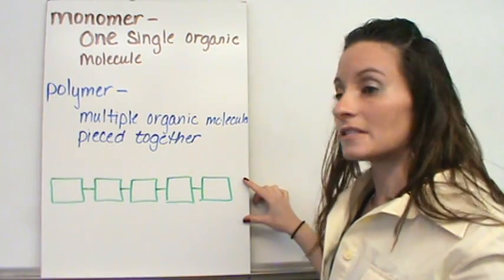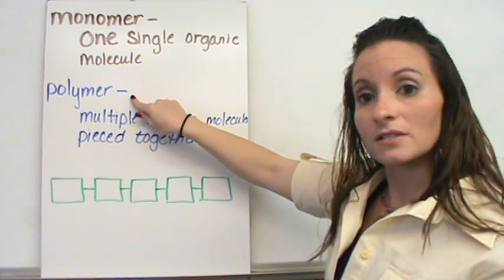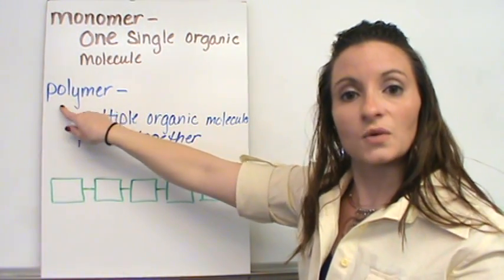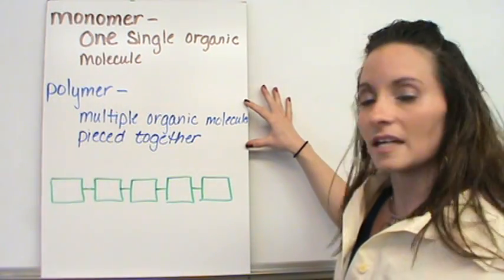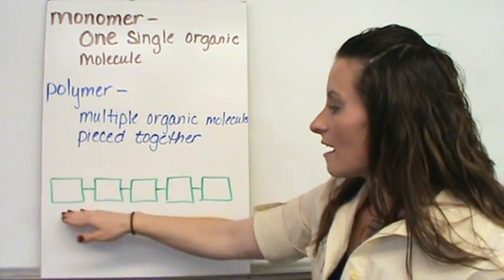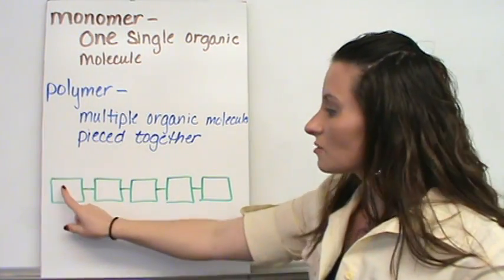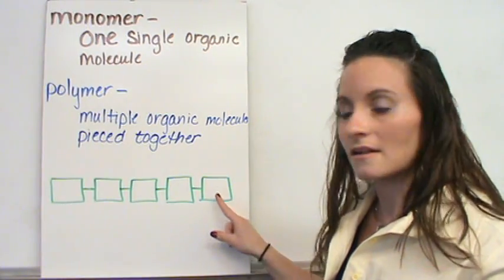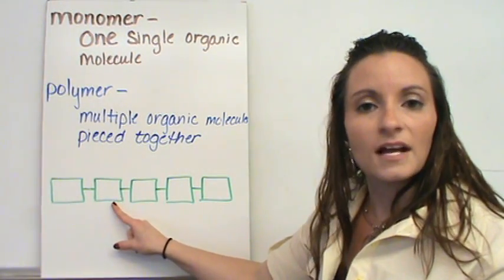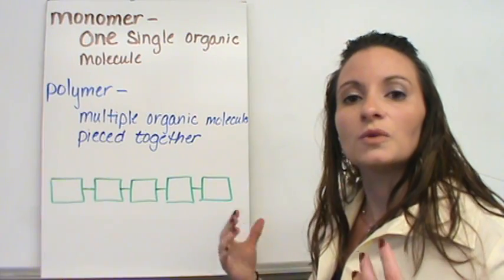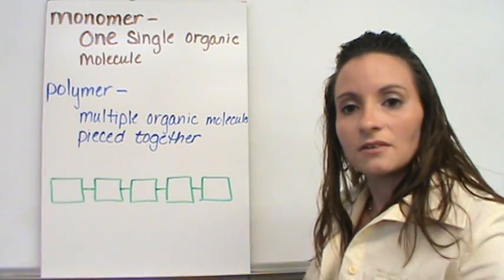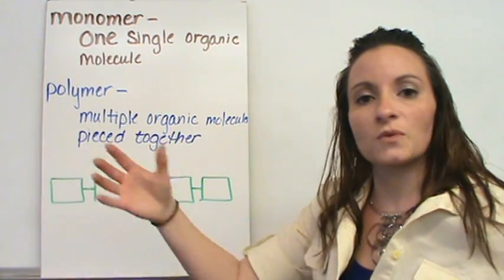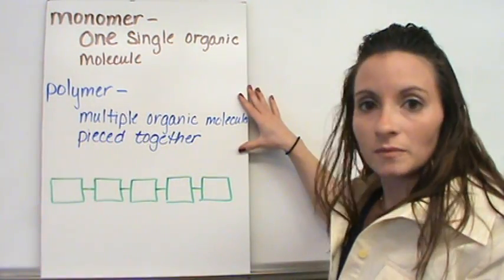When we start putting these together into chains, we get what are called polymers. A polymer, the prefix poly means many. And so, we have many of these organic molecules pieced together into what's called a polymer. So, each one of these pieces would be a monomer. And then the monomers get joined together and form the polymer into many pieces together. Kind of like a train. Each car of a train would be the monomer. And once we get the train all put together, that would be the polymer.